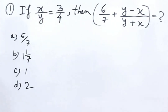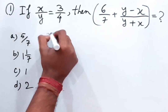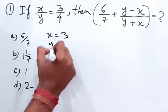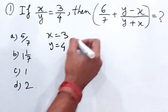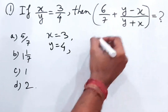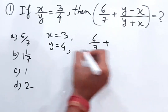The question is: if x/y = 3/4, then 6/7 + (y - x)/(y + x) = ? So here we can easily say that x = 3 and y = 4. Now we'll put the values in: 6/7 plus the value of y is 4 minus the value of x is 3.